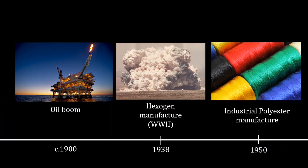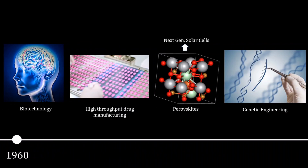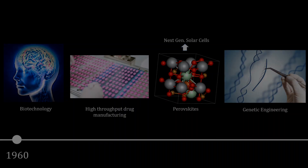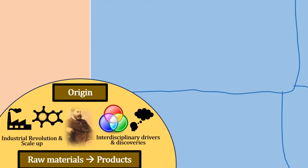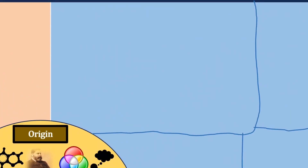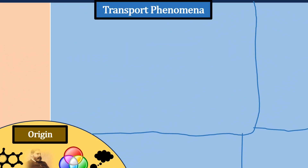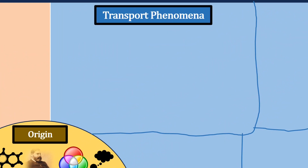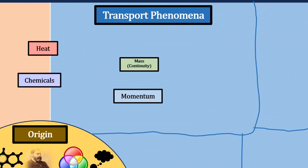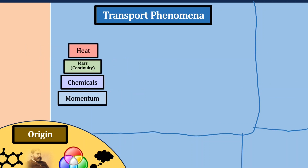Rapid advances happened throughout the mid to late 20th century towards healthcare, energy, novel materials, biotechnology and much more. Alongside this, one of the most important frameworks in chemical engineering was established: transport phenomena, principally concerning how heat, mass, chemicals and momentum are transported in a system.